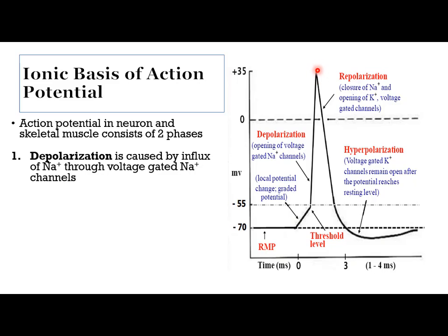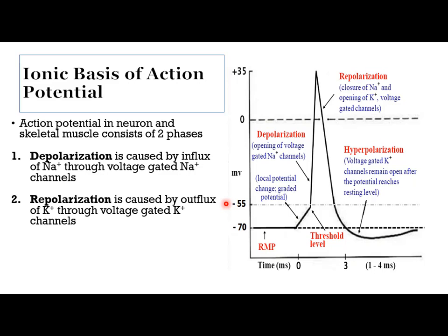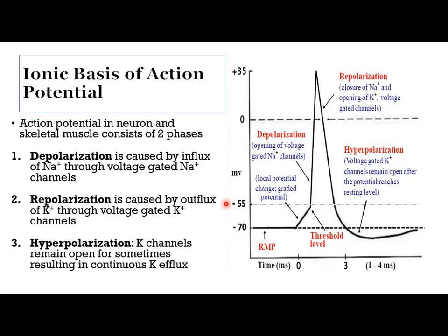When the membrane overshoots, the sodium channel becomes inactivated and potassium current increases, causing repolarization. Due to continued potassium efflux, a hyperpolarization state follows. So repolarization has two causes: outflux of potassium and inactivation of the sodium channel. Hyperpolarization occurs because potassium channels remain open for some time, resulting in continuous potassium efflux.